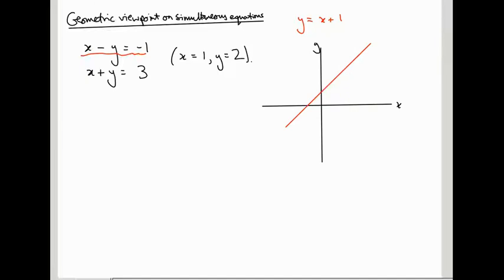This second equation, I just prefer writing the equations for lines with the y equals something. I'm sure many of you do too. So this is y equals minus x plus 3. The second equation here. So that's a line with slope minus 1. And its intercept is at y equals 3. This is not a scale, but something like this.